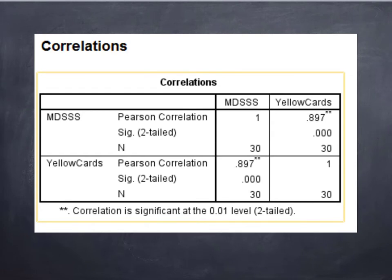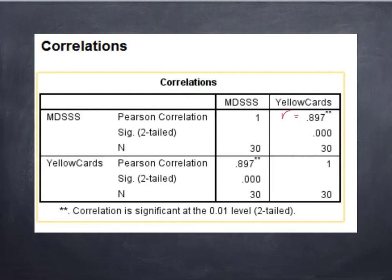This is what their output would look like if they were to do a correlation. You see a symmetric matrix where everything is identical if you cut it down the halfway. A variable when correlated with itself is always going to be a perfect 1.0, so that's why you see these ones here. The MDSSS correlated with the yellow cards — this Pearson is your R value. Students are going to report that R equals 0.897. The 0.00 underneath it is your SIG value or p-value; it's less than 0.05, so we're going to say it's significant. And N is the number of participants.